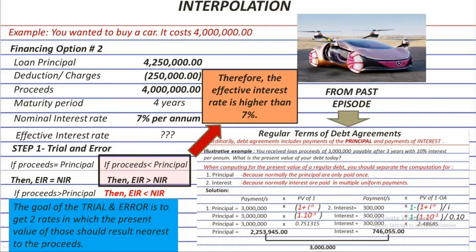In episode 7, we assumed a problem where you need to buy your dream car, which costs 4 million. Since you have no money, you consider two borrowing options. In the first option, the effective interest rate is already determined to be 10%. In the second option, the effective rate is not yet found, so we need to interpolate. But before that, we need to start with trial and error, getting the present value of the principal and the interest using rates higher than 7%.